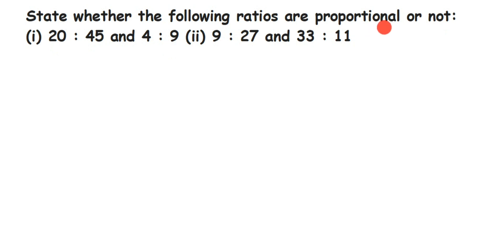Proportional is nothing but equal. So we have to check if the ratios are equal or not. Instead of using the word 'equal,' they are using the word 'proportional.' So if the ratios are the same or equal, we say they are proportional.